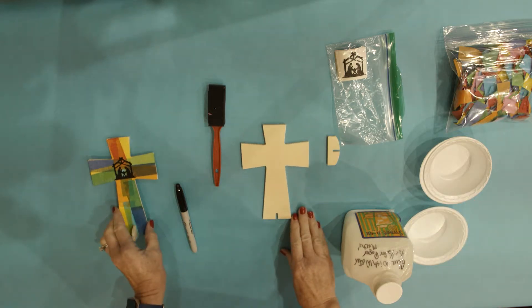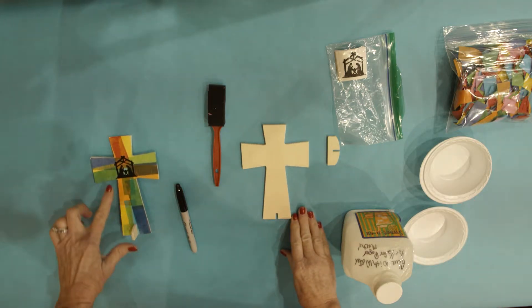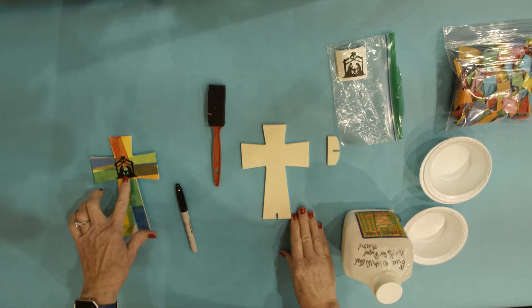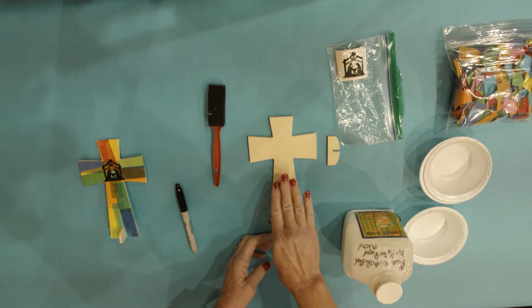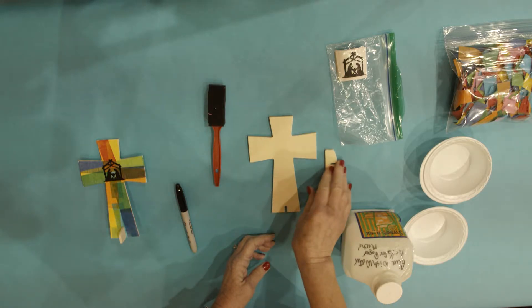Our next craft is the stained glass cross with the nativity. It's our nativity cross, and each child will have a cross with the base.